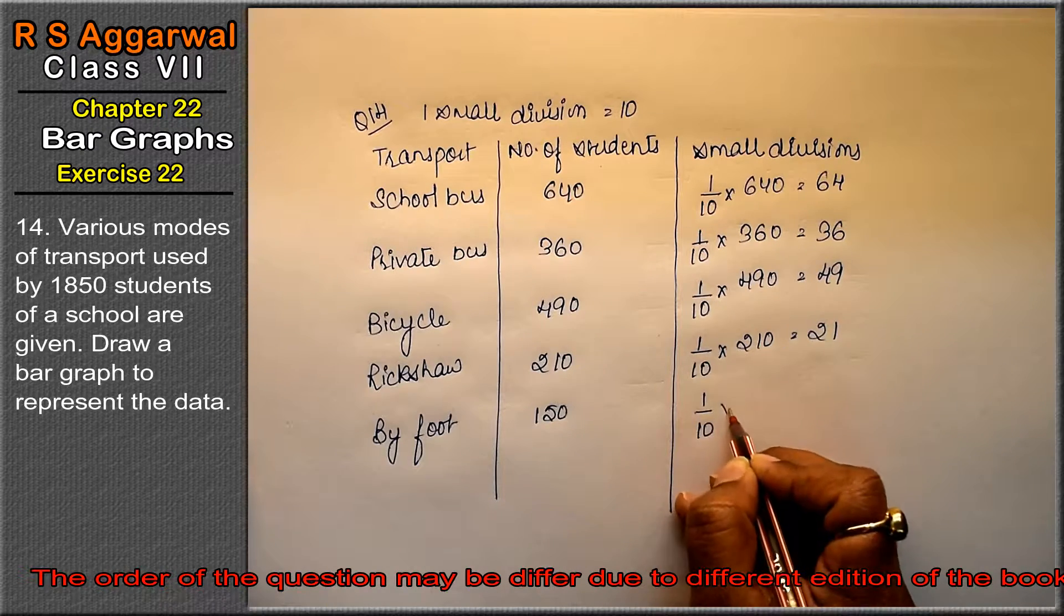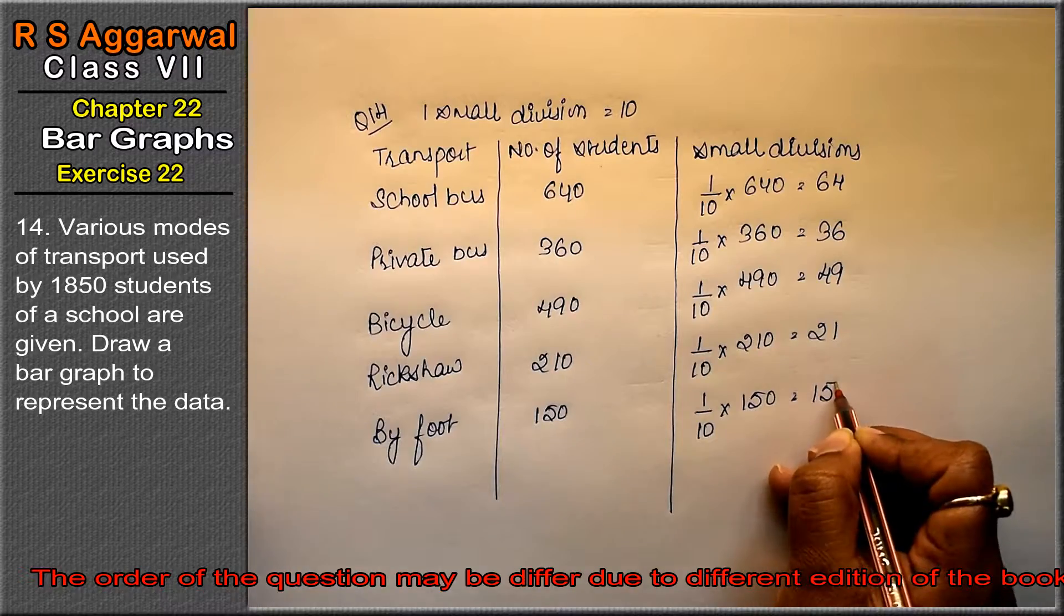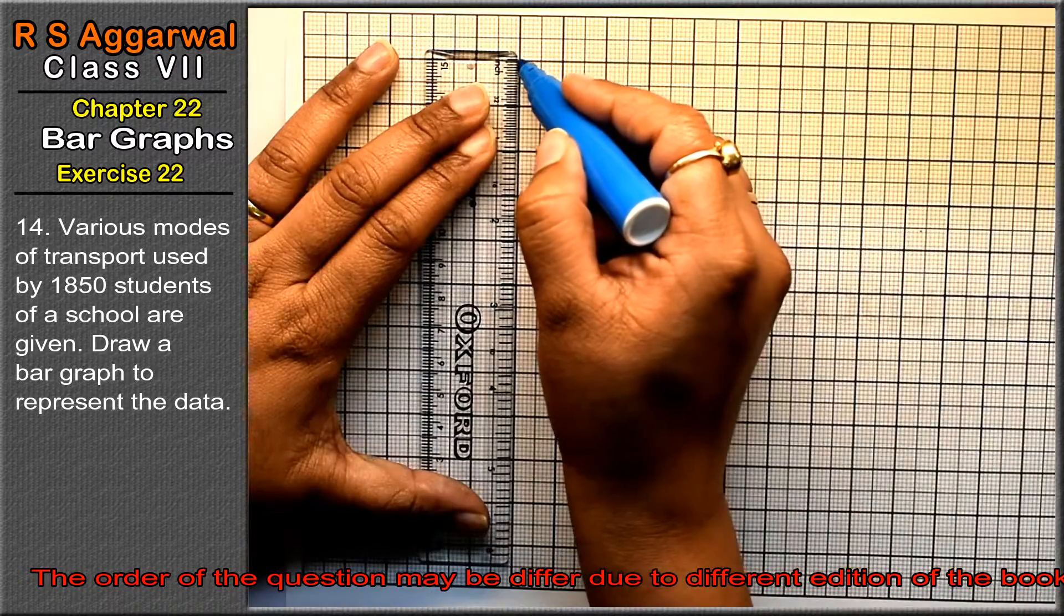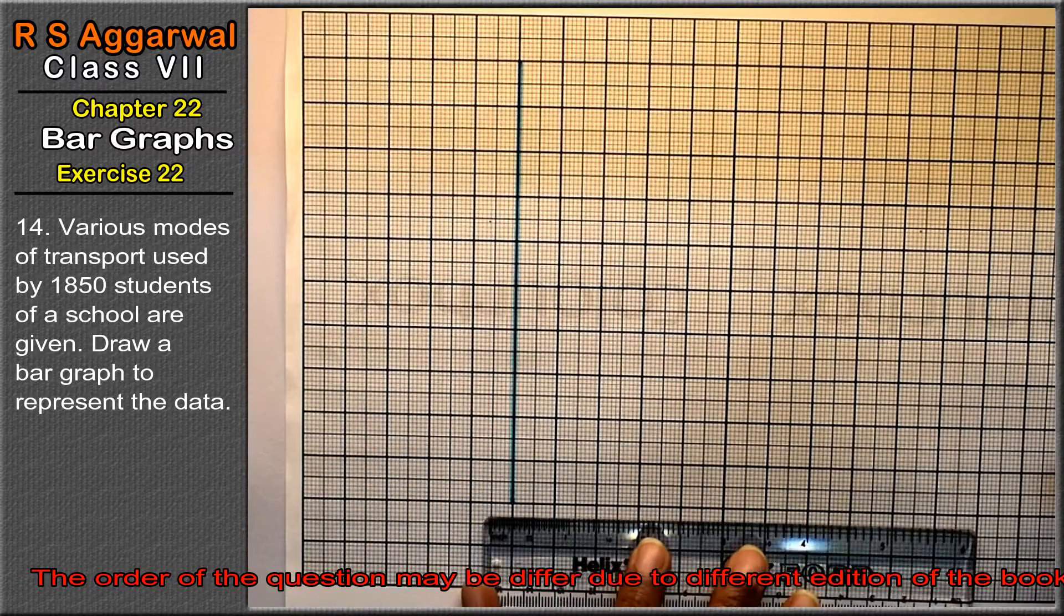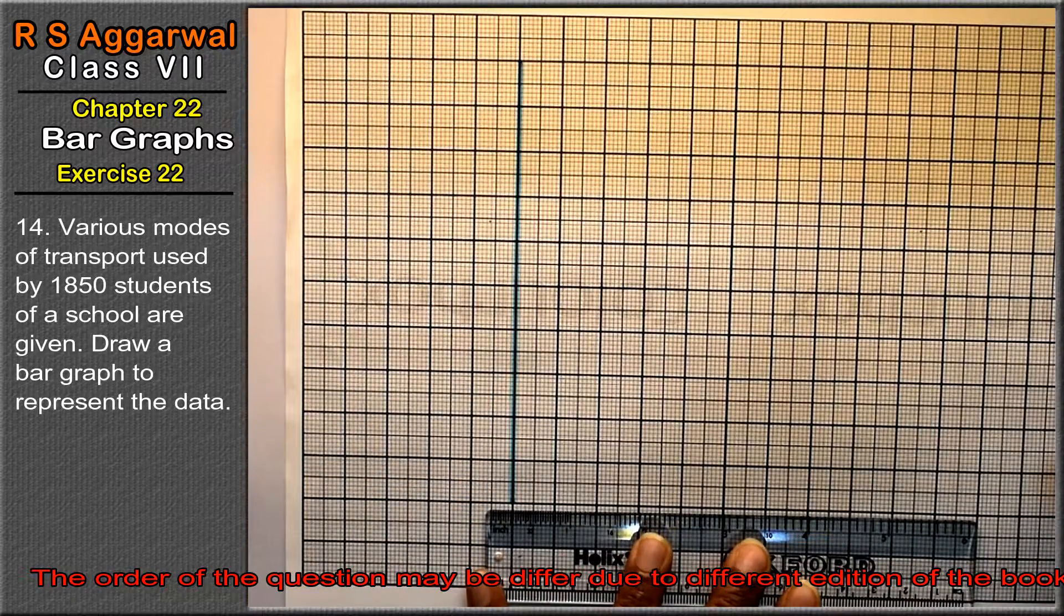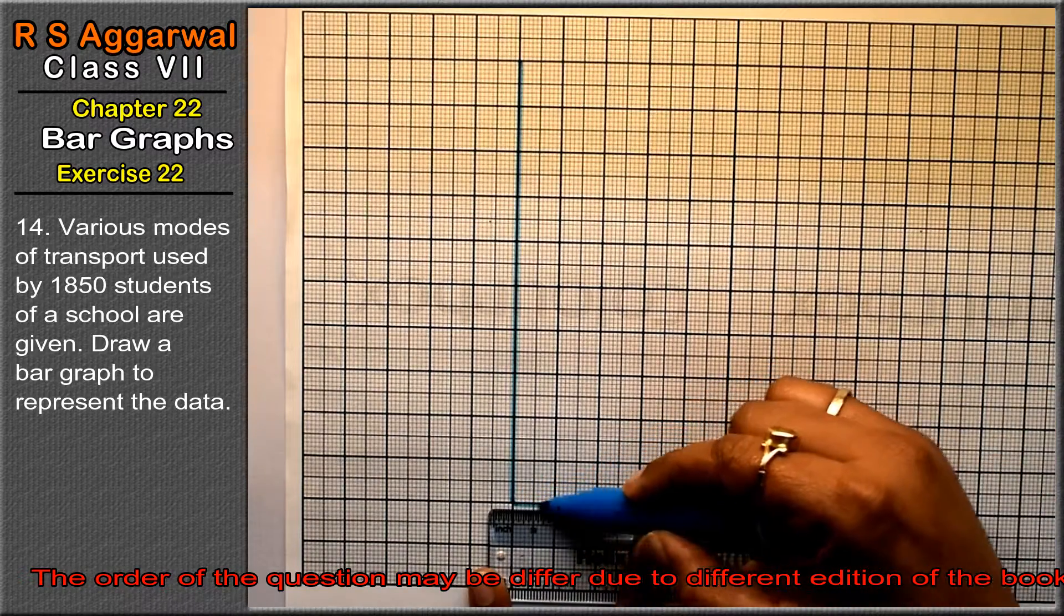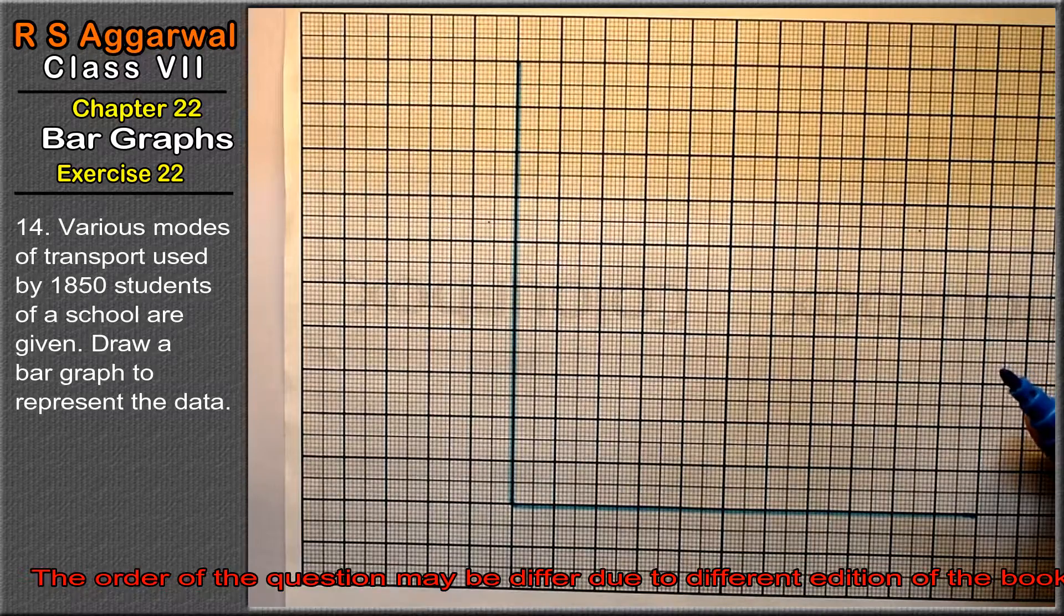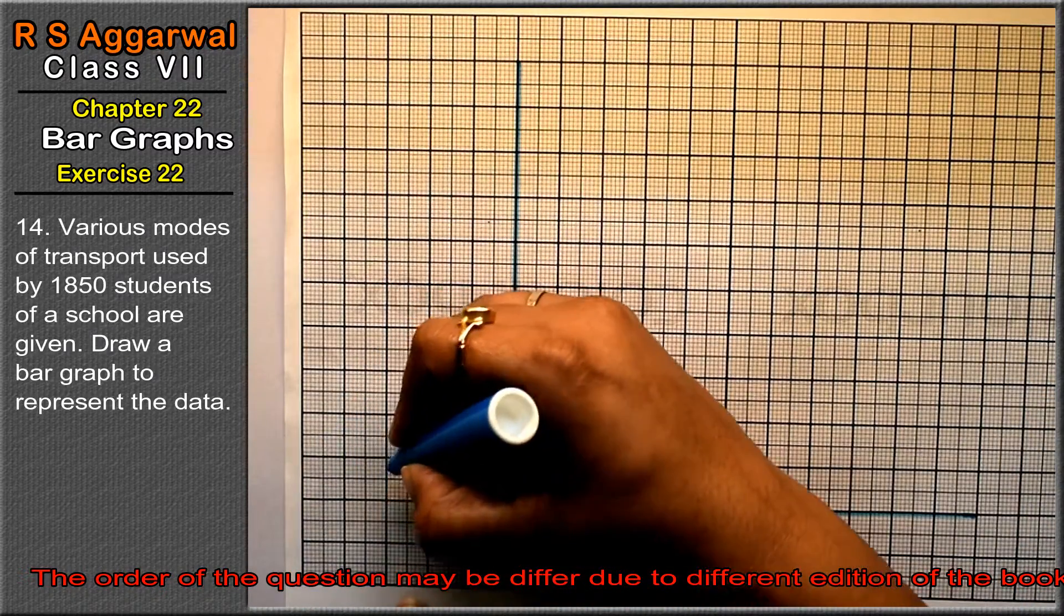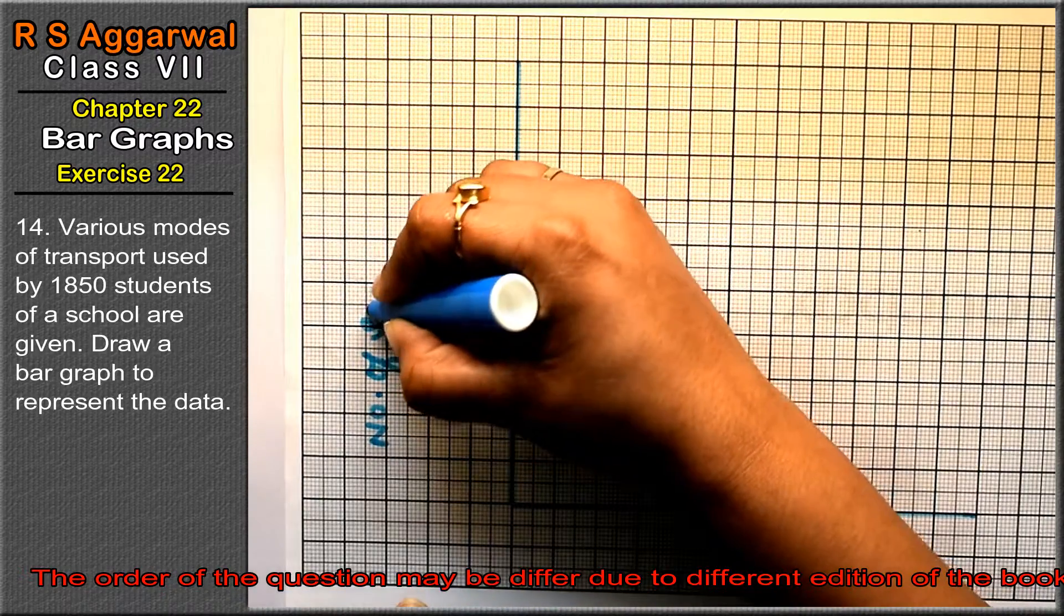1 upon 10 into 210 gives 21, 1 upon 10 into 150 gives 15 small divisions. Okay, let's make a graph and this is our y-axis and this is our x-axis. This is the number of students.